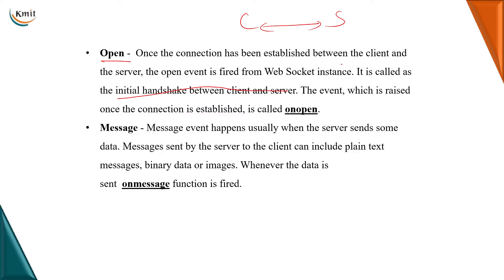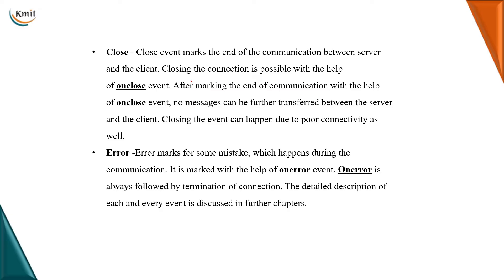The message event happens when the server would like to send some data. The data coming from the server to the client can be anything — it could be plain text, binary data, or images. Whenever data is sent, the onmessage function is fired.